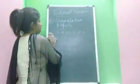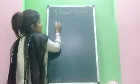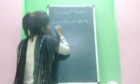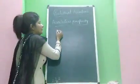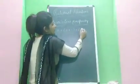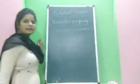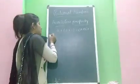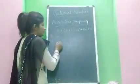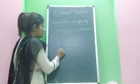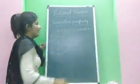The next property is the Associative Property. Associative property states that A ★ (B ★ C) = (A ★ B) ★ C. Like the commutative property, associative property holds only for addition and multiplication, and does not hold for subtraction and division.